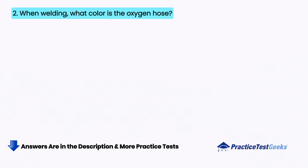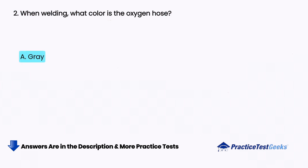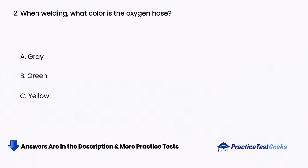When welding, what color is the oxygen hose? A. Gray, B. Green, C. Yellow, D. Red.